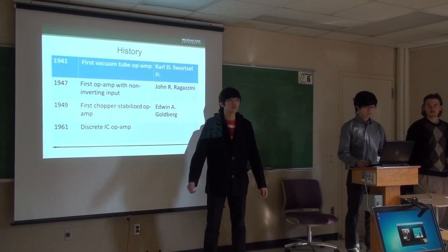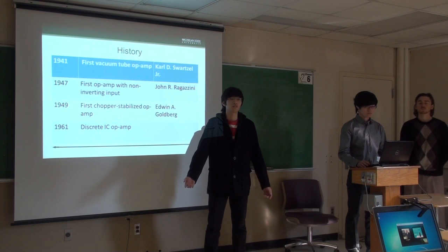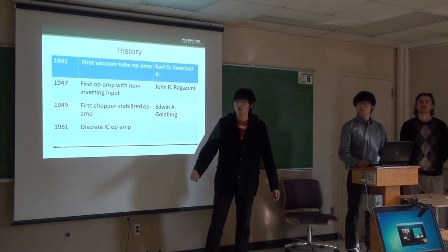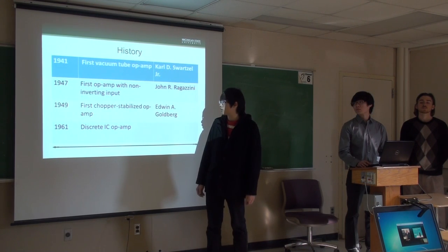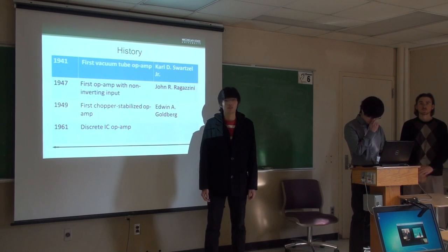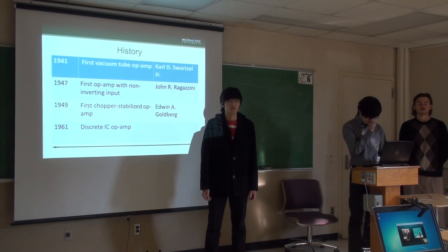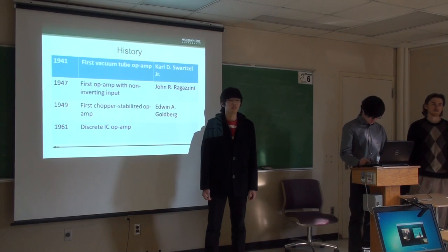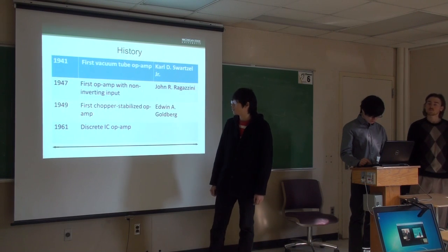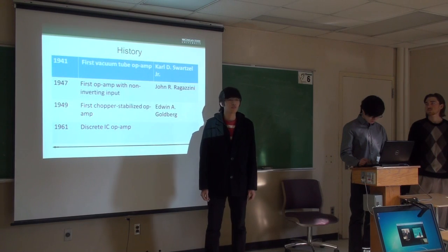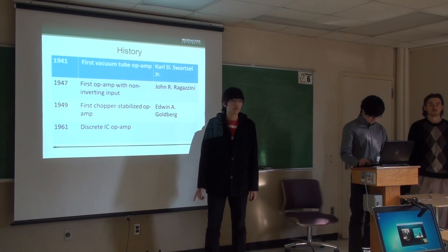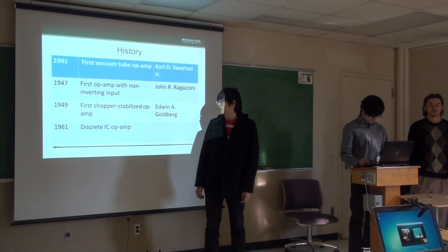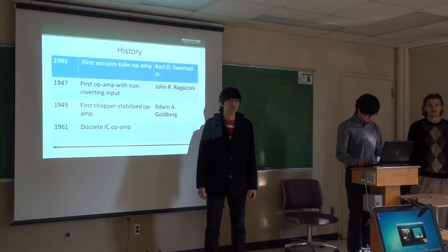The first IC op-amp was produced in 1961. With the invention of the transistor in 1947 and the silicon transistor in 1954, the idea of integrated circuits became a reality. In 1961, discrete IC op-amps were produced. They usually had small circuit packages such as edge connectors, and small circuit resistors to reduce DC offset and drift.